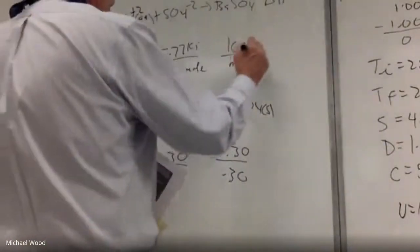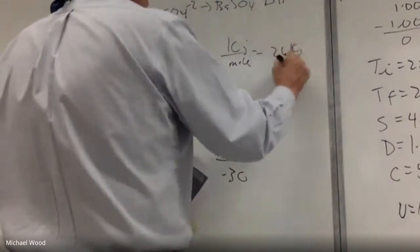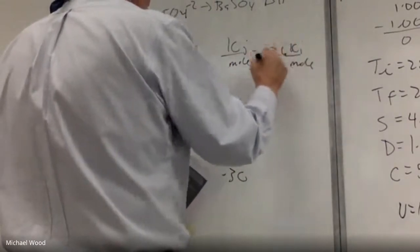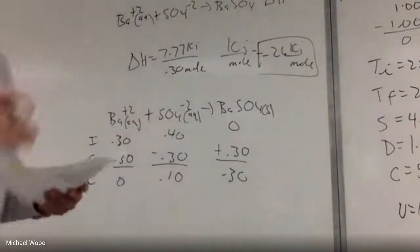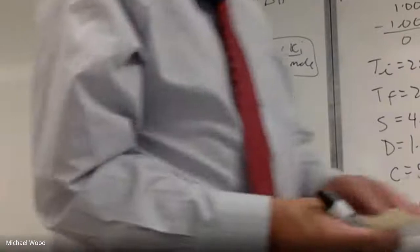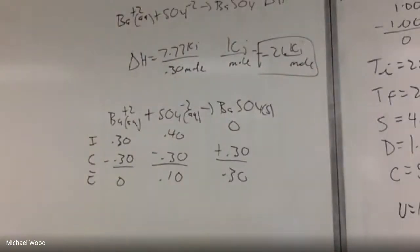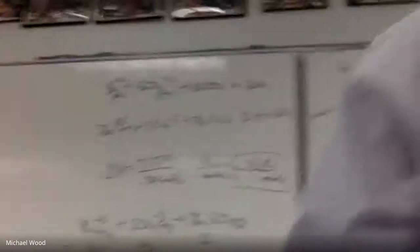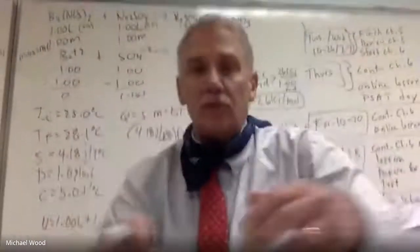The number that goes for moles is the moles of product formed, which is 0.30. So I take 7.77 divided by 0.3, which gives me 25.9 — or rounding, 26 kilojoules per mole. And again, remember the sign. The problem said the heat from the calorimeter was measured, so we're assuming it's exothermic. So the answer is −26 kJ/mol.